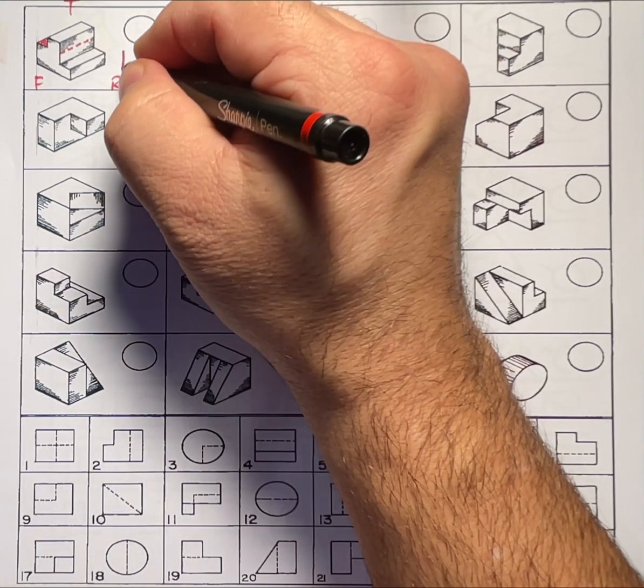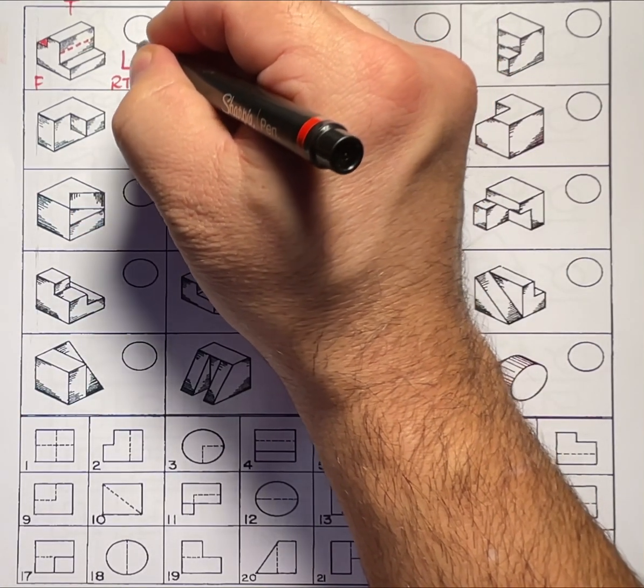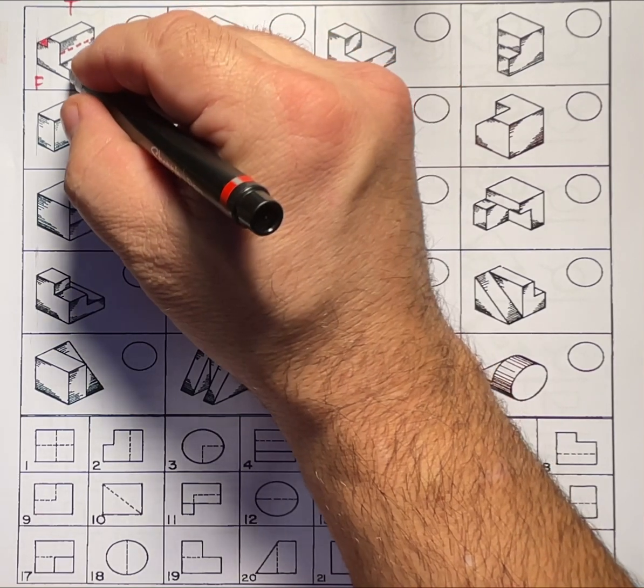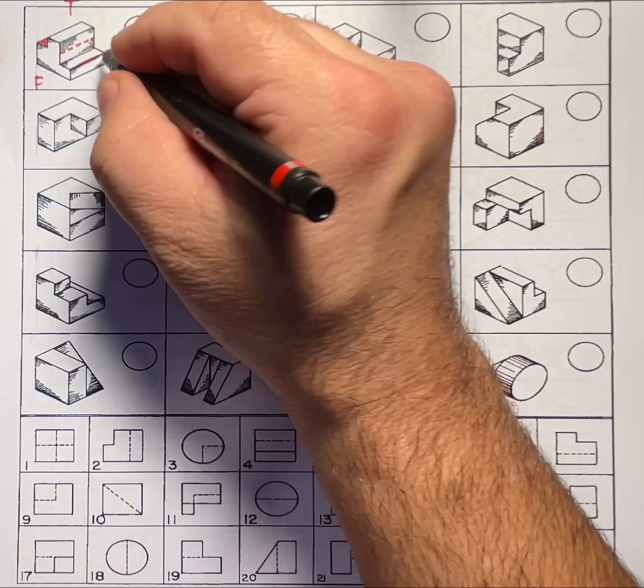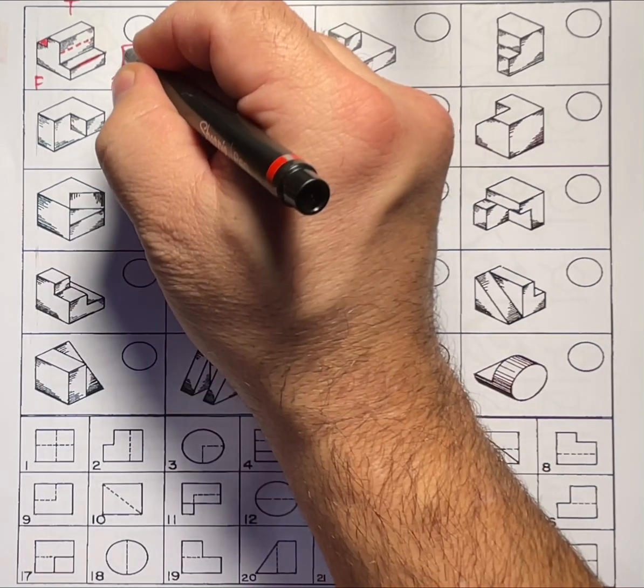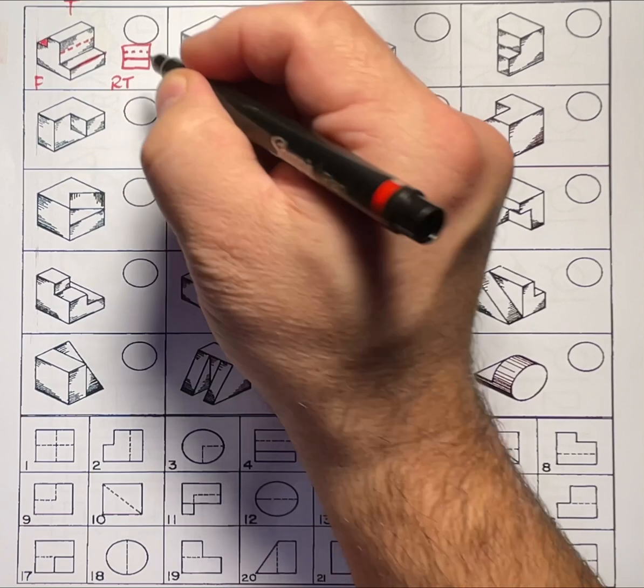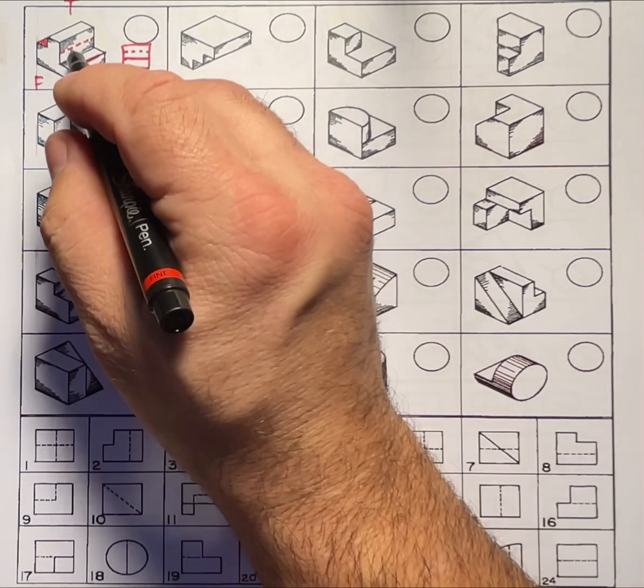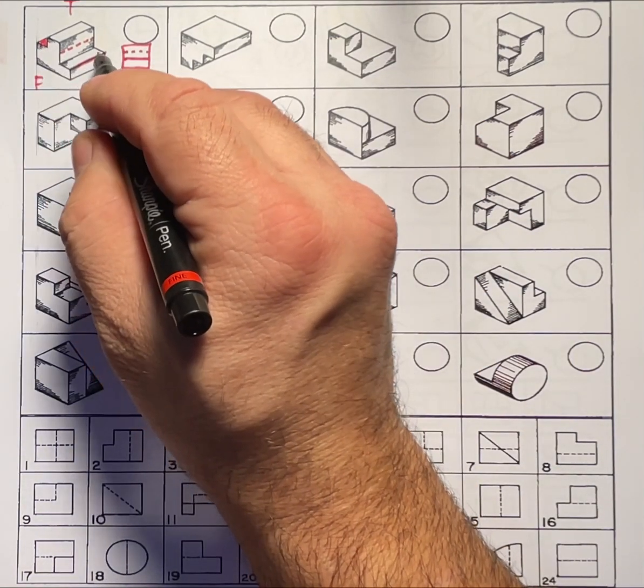So if I sketch that out for myself I'm going to see a square with an object line right here. It will be a solid line and then there will be a hidden line above it because that hidden line surface is above this surface here.